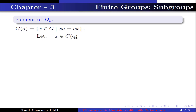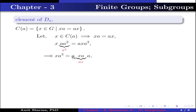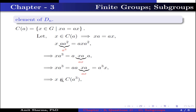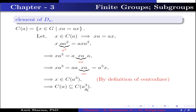Let x belong to the centralizer of A, which implies xA equals Ax. Multiplying A squared on both sides gives xA · A² equals Ax · A², and since A · A² equals A³, this implies xA³ equals A · (xA) · A. Since xA equals Ax, this becomes A · Ax · A, and again using xA equals Ax, this equals A³x. This implies xA³ equals A³x, so x belongs to the centralizer of A³ by the definition of centralizer. Therefore the centralizer of A is contained in the centralizer of A³.